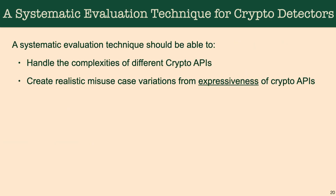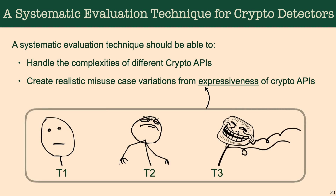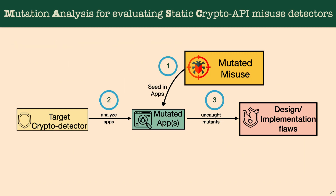What we really need is a systematic approach that can handle the complexities and diversities of cryptographic APIs, as well as create realistic misuse cases to evaluate these cryptodetectors. To recreate realistic misuse cases, we have to represent the expressiveness of these three developer types — T1, T2, and T3. In our work MASK, what we do is simple: we mutate these misuse cases, seed them in open source applications, and run cryptodetectors on these applications to see whether they can kill those mutants or not.